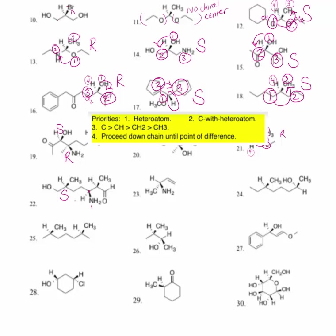At the next chiral center of number twenty-two: nitrogen is number one, hydrogen is number four — again pushed to the rear. Here I have a CH2, and here I just have a CH. CH is heavier than CH2, so we call this number two and this number three. We rotate counterclockwise, and that makes this an S configuration as well.